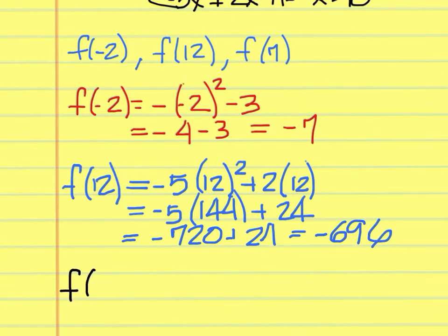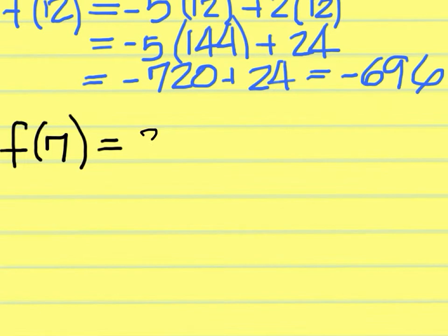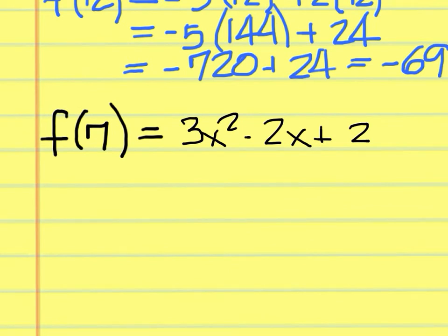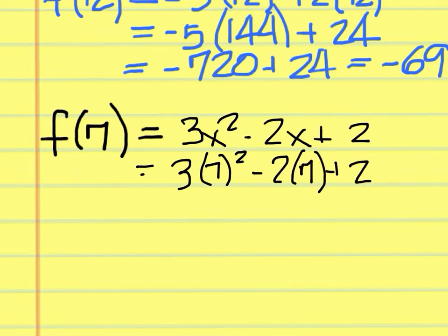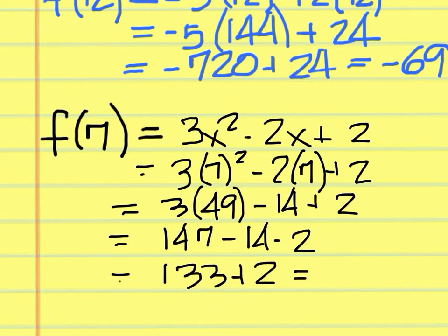The next problem is f of 7. We use the second function because 7 is between 3 and 10, and that function is 3x squared minus 2x plus 2. Putting in 7: 3 times 7 squared minus 2 times 7 plus 2, that's 3 times 49 minus 14 plus 2. 3 times 49 is 147; take away 14 gives 133; add 2 gives 135.